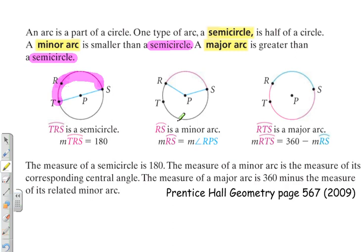Here, arc RS is a minor arc, so from R to S is a minor arc, and the measure of arc RS is equal to the central angle, the measure of angle RPS. So RPS will give us the measure of this arc. They're the same measure.